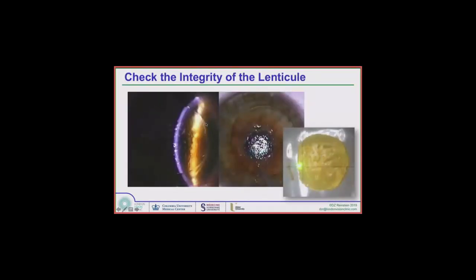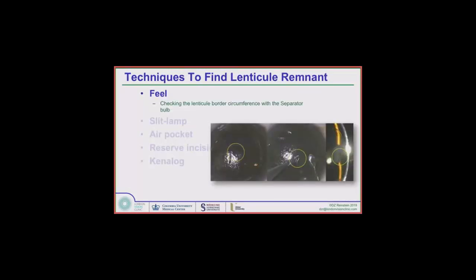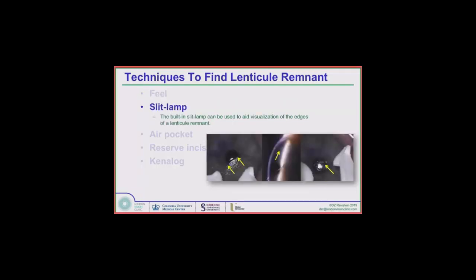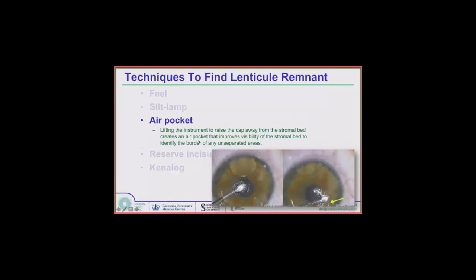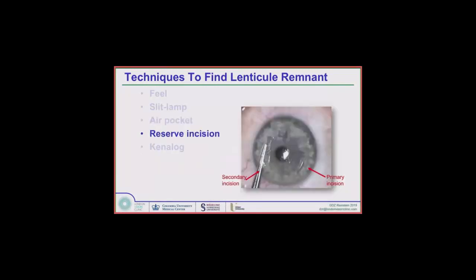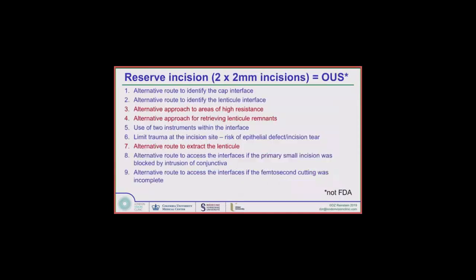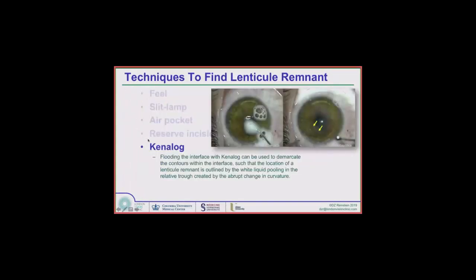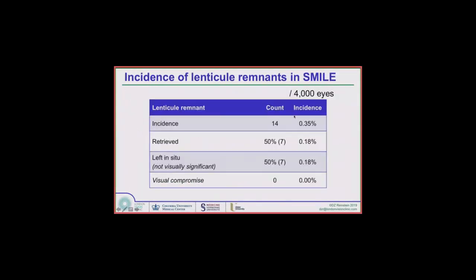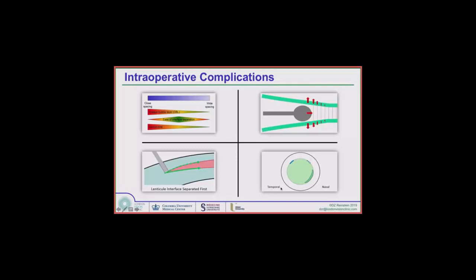Retained particles: you should always check your lenticules at the end, as small pieces may have been torn away due to thin lenticules or OBL in the periphery. There are five techniques for detecting these fragments: you can feel around the border, use the attached slit lamp, lift and use an air pocket for better visualization of edges, use the reserve incision — we use two 2mm incisions outside of the US — or use canalog in the interface to delineate interfaces. Retained lenticule fragments don't cause a problem if you identify and remove them, and even small ones left behind don't cause a problem.